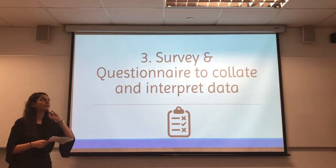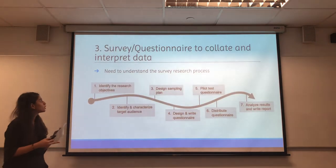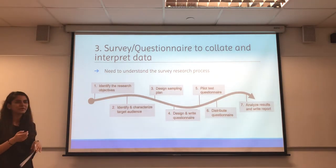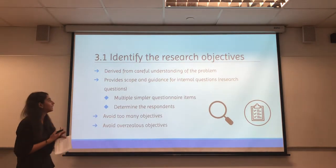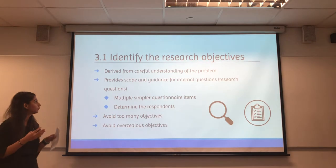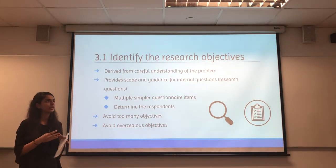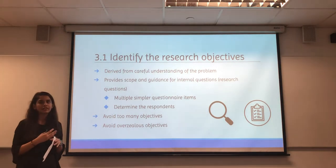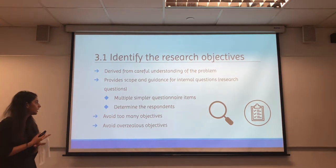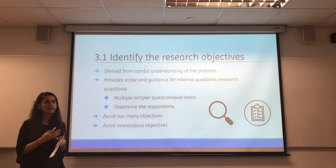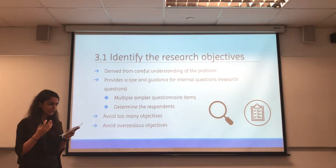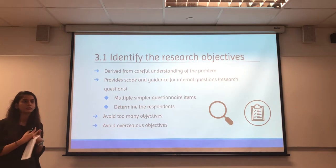Now I will talk about how Orion developers can design a survey and questionnaire to collect and interpret data. To design a survey, they need to understand the survey research process. Firstly, they will have to identify the research objectives, which can be derived from understanding the problem. This provides scope and guidance for the research questions. These research questions can be complex and need to be broken down into simpler questionnaire items for respondents to understand. Orion developers should also avoid too many objectives, as this will distract from the main objective, and should set realistic expectations from the survey.